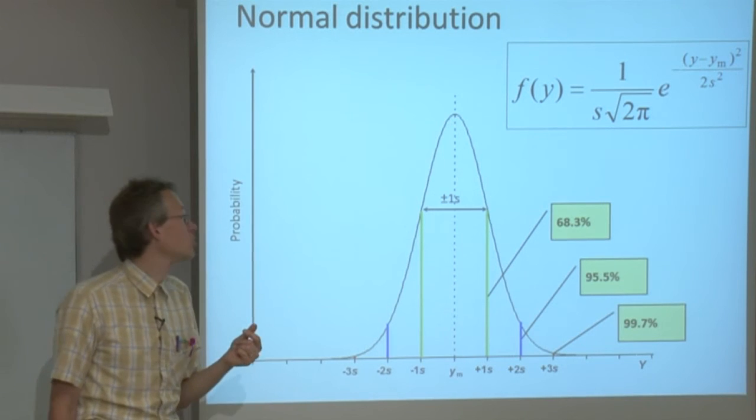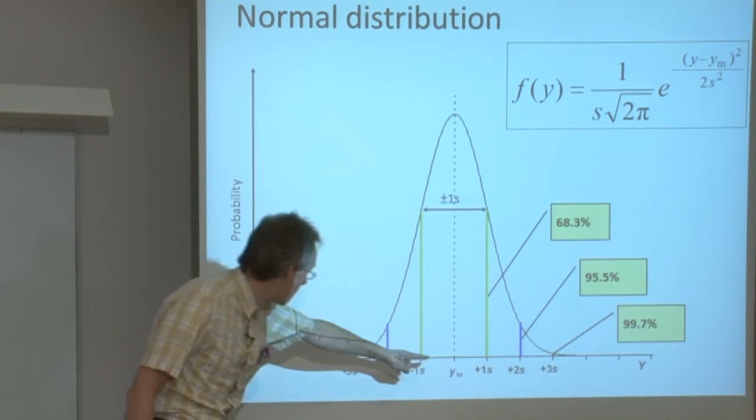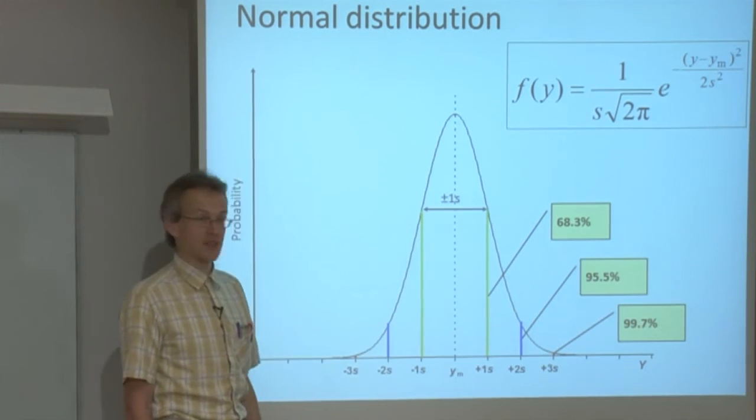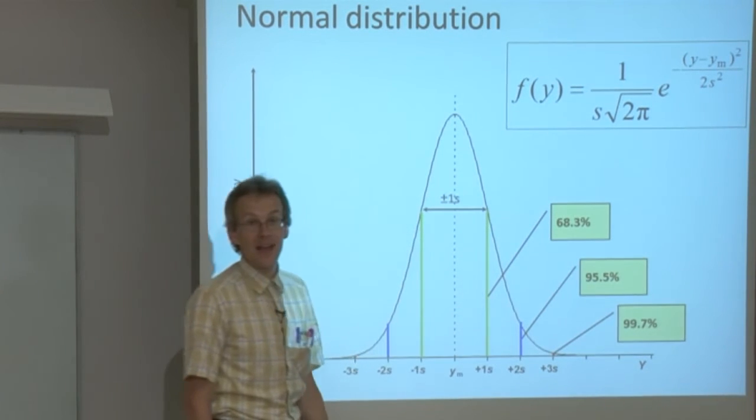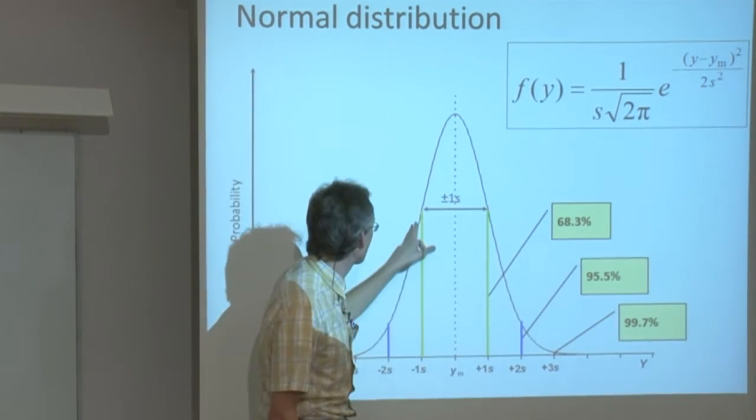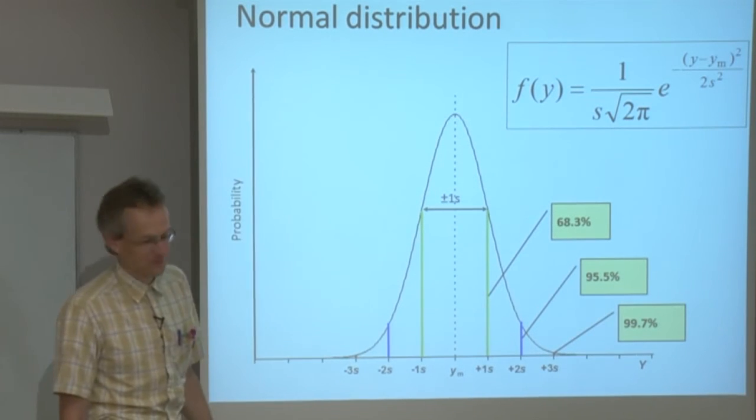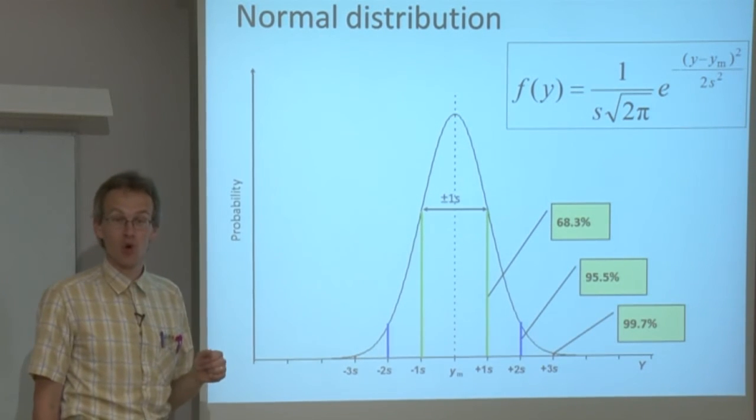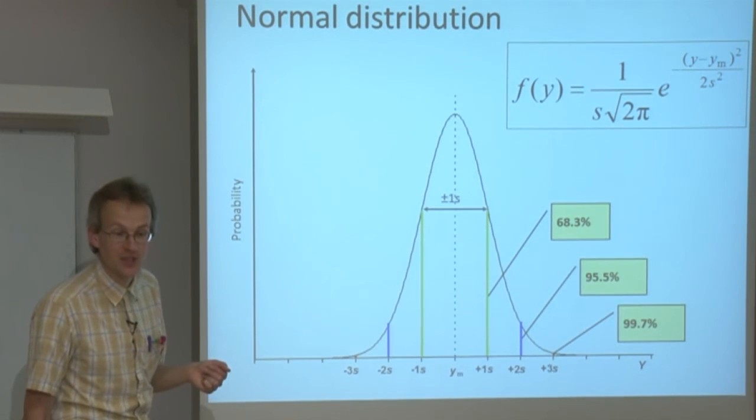Those most important characteristics or parameters are two. The mean value, which characterizes the position of this curve, and the standard deviation S, which characterizes its width or the scatter of the results. The smaller the standard deviation, the smaller the scatter of the results.